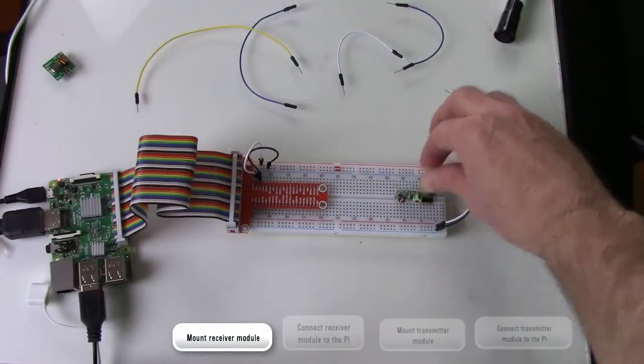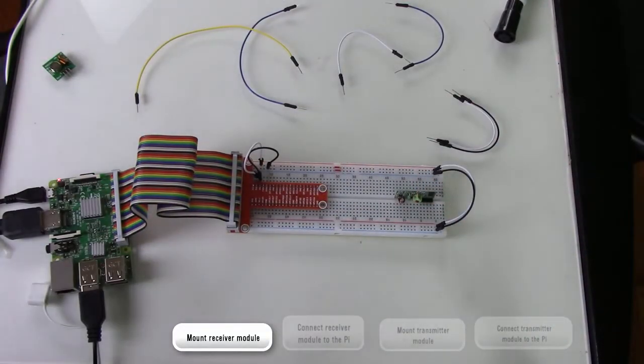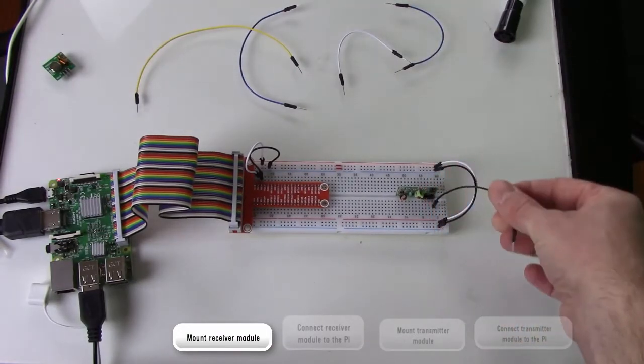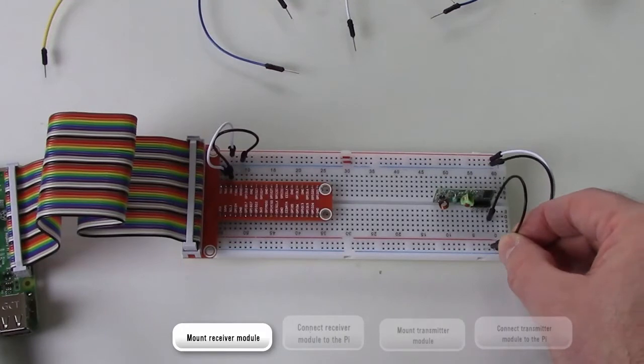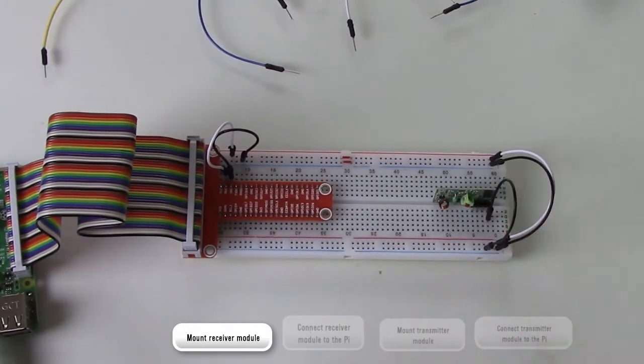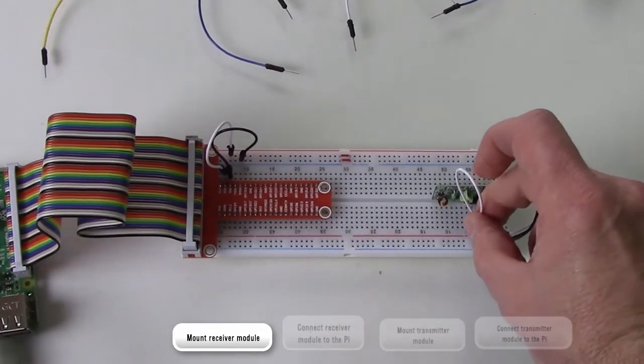Now mount the receiver module on the far right of the breadboard. Connect the ground pin to the negative rail and connect the VCC pin to the positive rail.